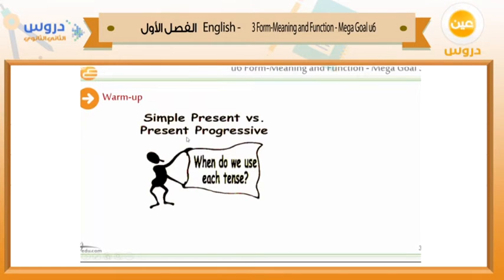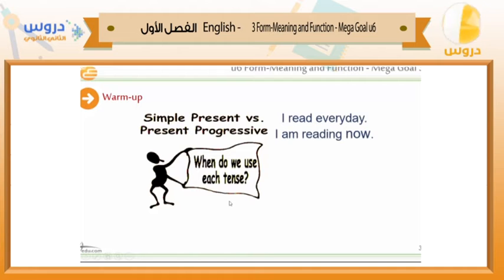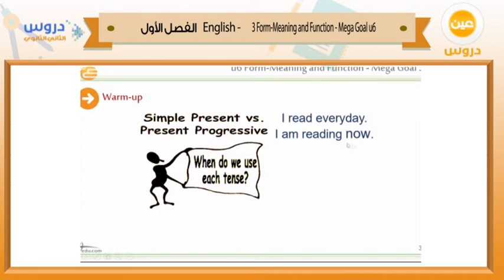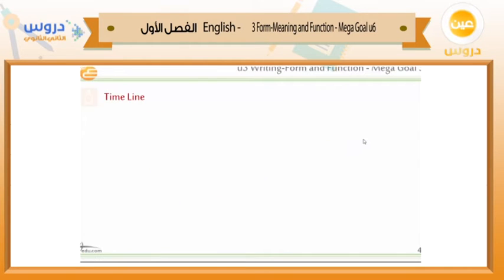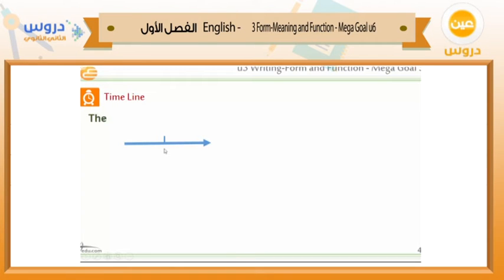Warm up: What are the differences between simple present and present progressive? When do we use each tense? Here are two examples. This sentence is in simple present tense and the other is in present progressive. 'I read every day' — this is simple present. 'I am reading now' — this is present progressive. The time expression used is 'every day' and the time expression used is 'now'.